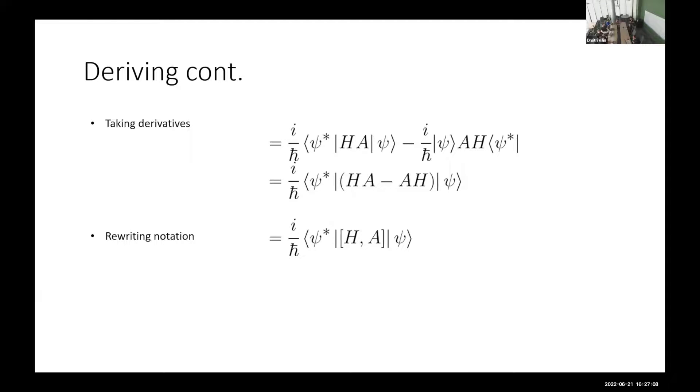And then once applying our derivatives, our H is our Hamiltonian, just from taking the derivative. And then we end up doing the i over h-bar, the conjugate times H minus A, minus H times our wave function again, which can be written this way. But one way that you'll commonly see it is this notation on the bottom, but these last two parts are the same thing.